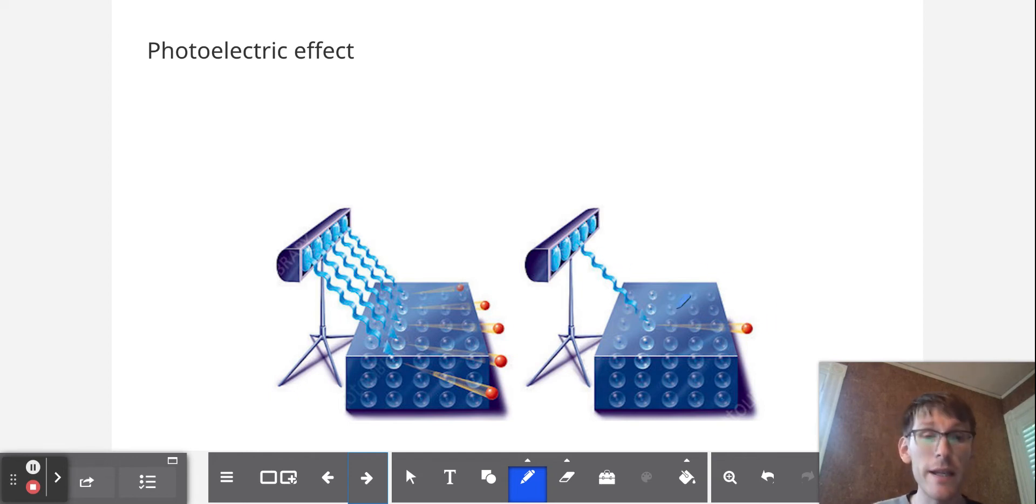The rate of electrons being emitted is lower when there's low intensity, but at least you get some. And then when there's a higher intensity, you get a faster rate of electrons being ejected. So this indicates it's not about the intensity of the light that indicates the energy of the light. It's something else.